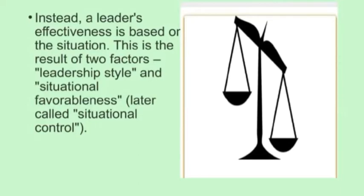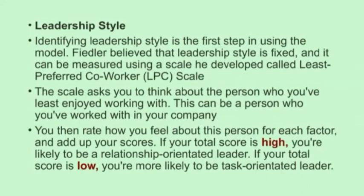A leader's effectiveness is based on the situation. This is a result of two factors: the leadership style and the situational favourableness, also called the situational control. It could weigh toward either the style of leadership or how favourable the situation is for that leadership style.